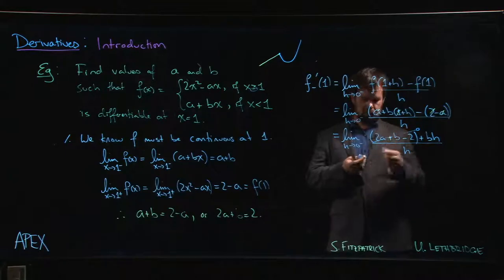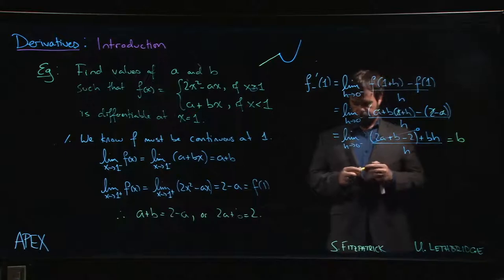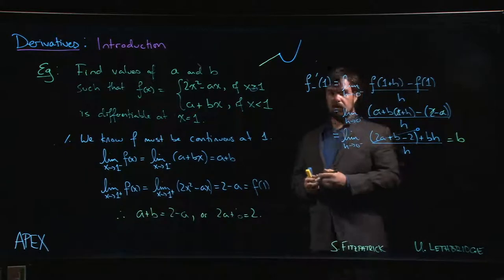So that's zero, and that leads me to simply bh/h, and so I have b. All right, now we do it all over again